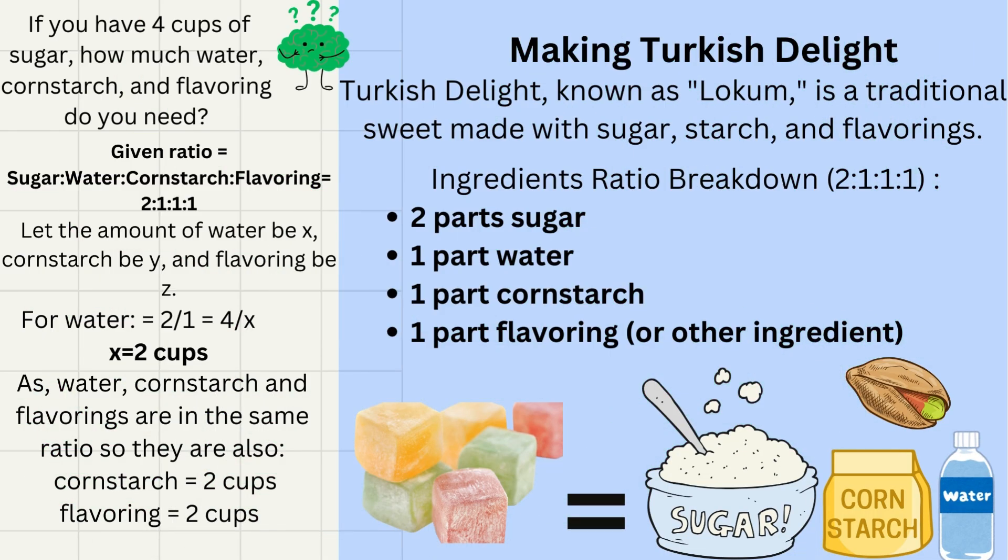Making Turkish delight. Turkish delight, known as locum, is a traditional sweet made with sugar, starch, and flavorings. There is a specific ratio of ingredients. If you want to change the quantity of any specific ingredient, then other will also change in the given ratio.